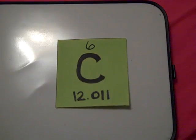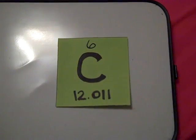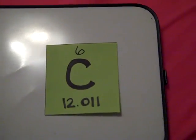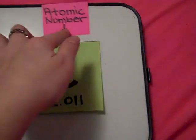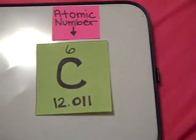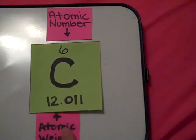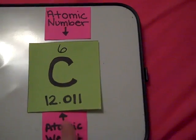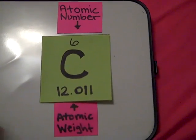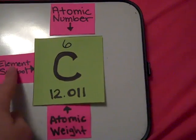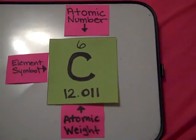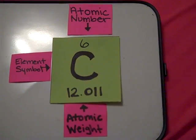Elements on the Periodic Table of Elements are made of three parts: the atomic number, the atomic weight, and the element symbol.